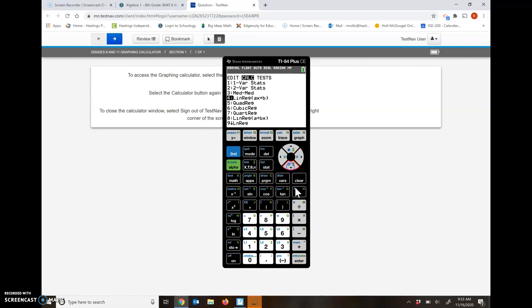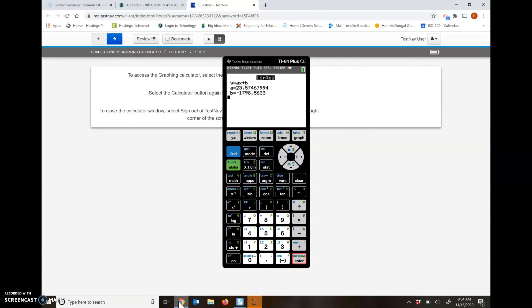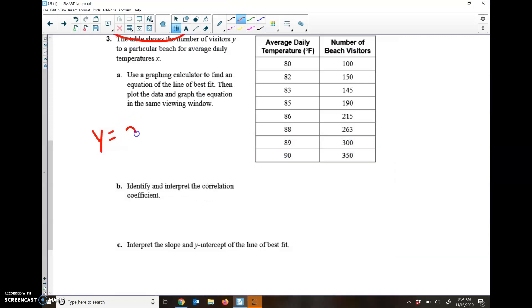Putting these in here, let's see if there's a formula that we can use to predict how many people are coming to the beach. We got 23.57 and then our B is negative 1,798. So that seems really weird. Let's write that down. Y equals about 23.5X and then minus about 1795.